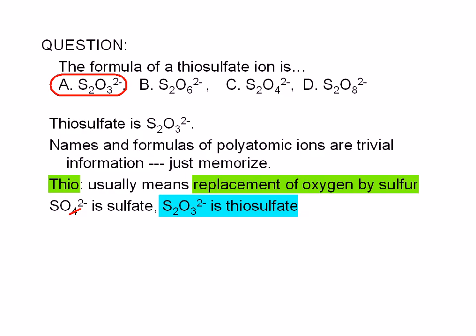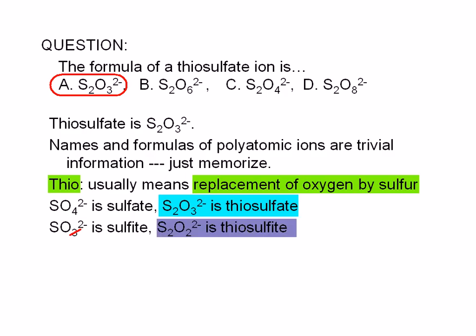Similarly, replacing one of the oxygen atoms in a sulfite ion by sulfur gives us thiosulfite, S2O2 with a negative 2 charge.